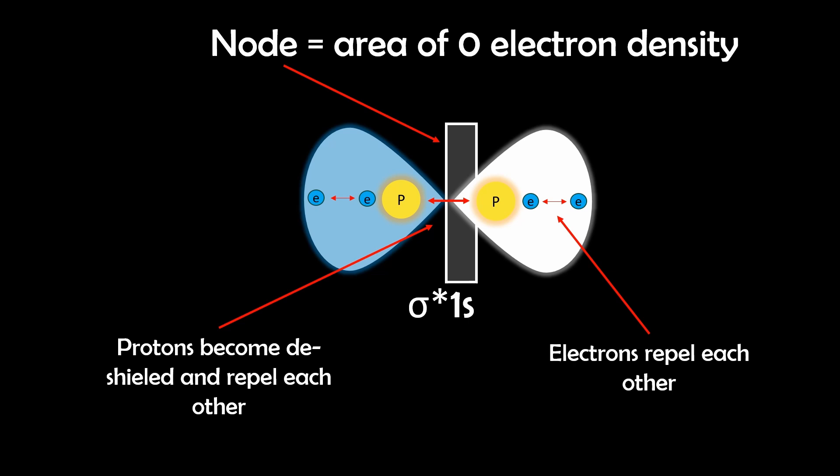But on the other hand, anti-bonding orbitals arise from destructive interference, creating a node which is an area of zero electron density between the two nuclei. And this lack of electron shielding increases repulsions between the positively charged nuclei, making the anti-bonding orbital actually higher in energy. So although these electrons in the anti-bonding orbitals are still attracted to each nucleus, they must instead overcome the increased repulsions resulting in this destabilizing effect.